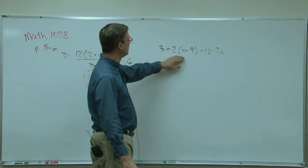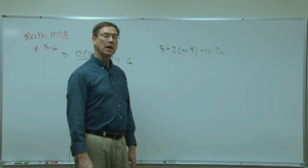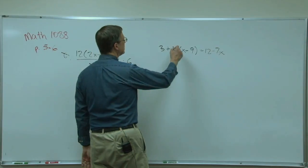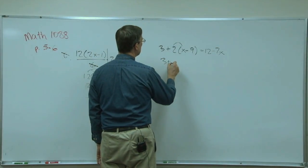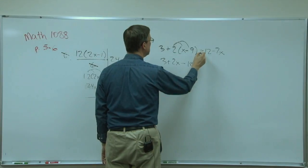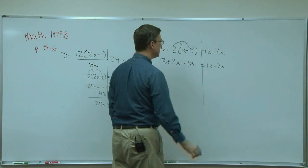Let's try this one. We're going to do distributive property. This one I'm going to end up with an x on both sides of the equation though, so that's a little different. Let's distribute: 3 plus 2x minus 18 equals 12 minus 7x.